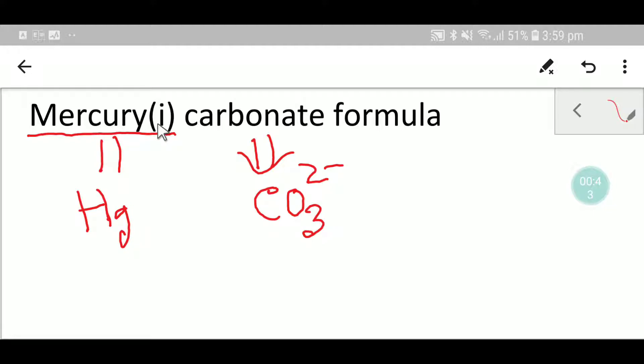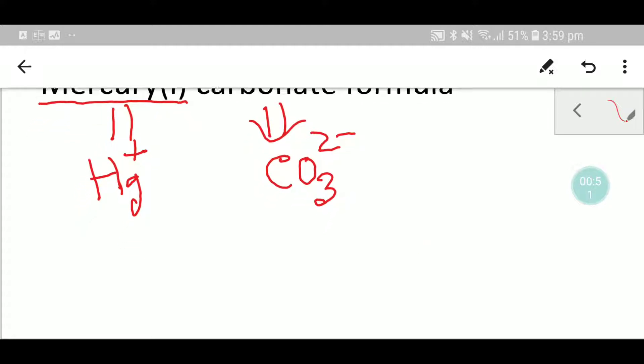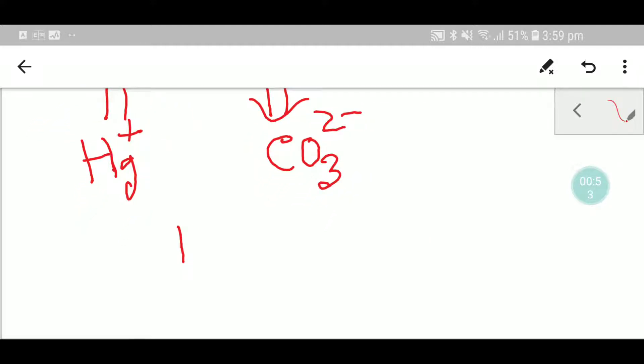And this one, this means the oxidation state of mercury. So let me write that one plus. So you have gotten your targeted ions.